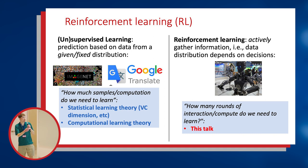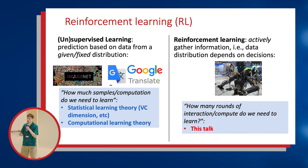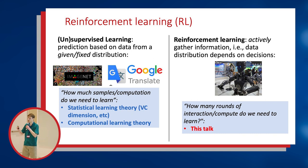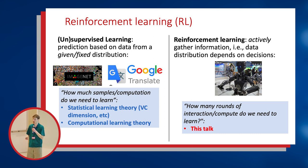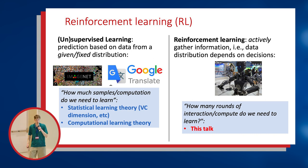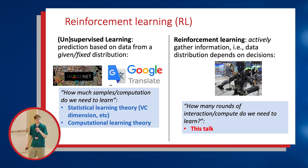Reinforcement learning is a little bit different from these classical problems in that it describes a problem of actively learning in a dynamic environment. The distribution of data that you see as a learning agent will depend on past decisions you've made. This includes problems such as robotics, where a robot has to actively explore its environment, as well as things like healthcare, where you have a patient whose state is changing and you want to make decisions to improve their health over time.